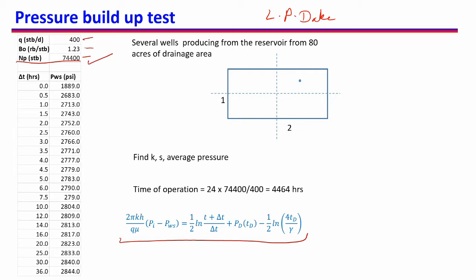After the reservoir has been producing for about seven and a half months, we do a build-up test on a well which has been producing in the recent past at a flow rate of 400 stb per day. The build-up test data is given: at delta T = 0 when we start the build-up test, the PWF — the well flowing pressure — was this value, and as the shut-in time increases, this is how the shut-in wellbore pressure increases.